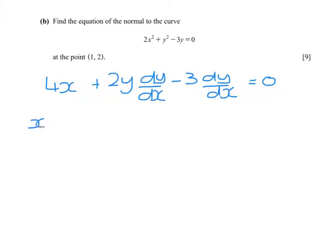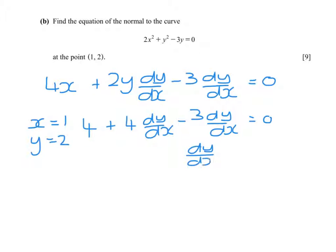When x equals 1 and y equals 2, we have 4 plus 4 dy/dx minus 3 dy/dx equals 0, which gives us dy/dx equals minus 4. We're asked for the equation of the normal.